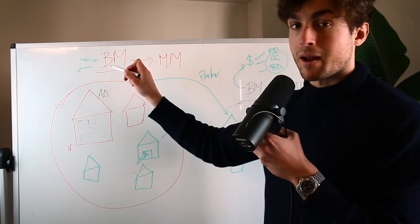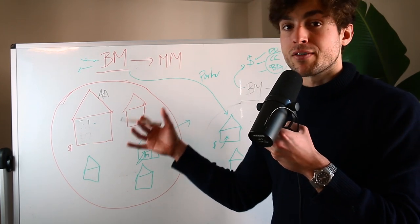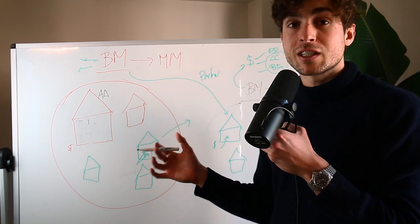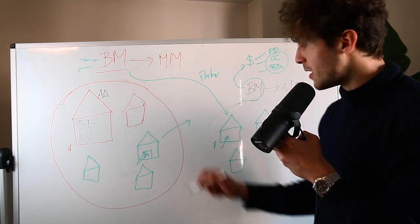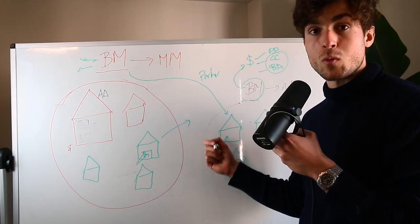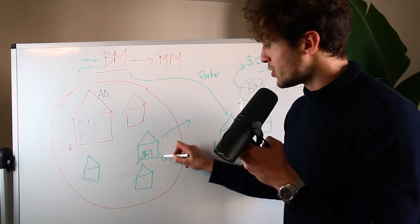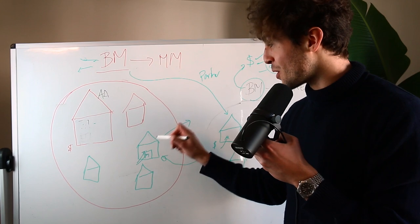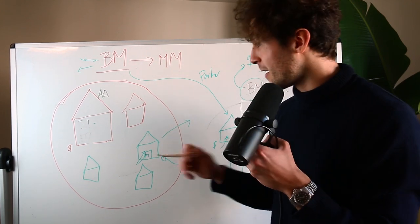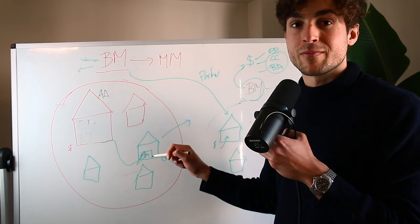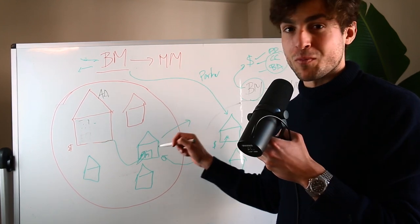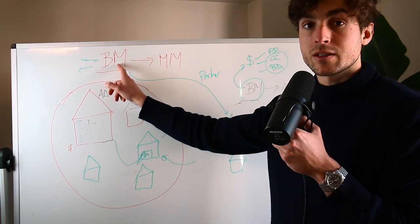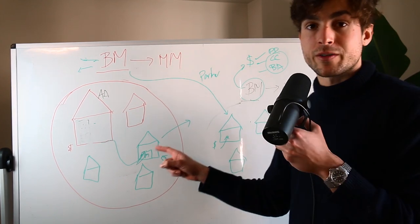To recap: you've got your own business manager — your village. Within it, you can build up to five ad accounts, but you won't be spending money from yours. Instead, Nike has their own business manager and gives you partner access to one of their ad accounts, which then becomes part of your village but can leave at any point. They pay for all the ads; you build and scale campaigns to make them money.